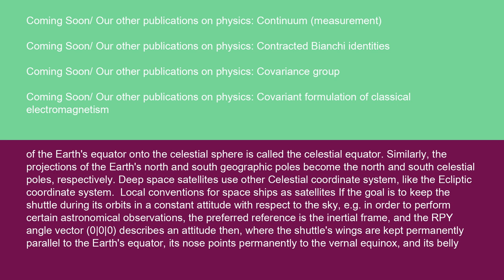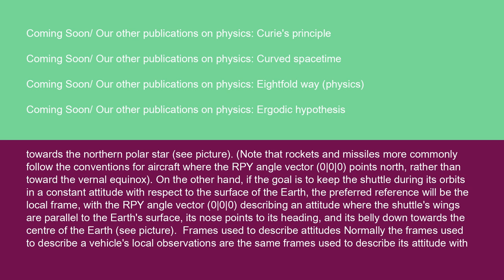Local conventions for space ships: if the goal is to keep the shuttle during its orbits in a constant attitude with respect to the sky, for example to perform certain astronomical observations, the preferred reference is the inertial frame. The RPY angle vector 0-0-0 then describes an attitude where the shuttle's wings are kept permanently parallel to the Earth's equator, its nose points permanently to the vernal equinox, and its belly towards the northern polar star. Note that rockets and missiles more commonly follow the conventions for aircraft, where RPY 0-0-0 points north rather than toward the vernal equinox. On the other hand, if the goal is to keep the shuttle in a constant attitude with respect to the Earth's surface, the preferred reference is the local frame, with RPY 0-0-0 describing an attitude where the shuttle's wings are parallel to the Earth's surface, its nose points to its heading, and its belly down towards the center of the Earth.